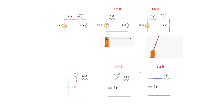Now look at this one. The direction here — this was going up, so it was opening. This one is going down, that means this barrier will come down, so this will close. That means before t is equal to 0, this is open. Before t is equal to 0 this is open, and after t is equal to 0, this will close. So after t is equal to 0, we show it as closed.